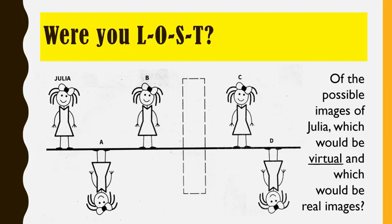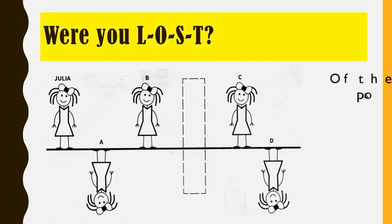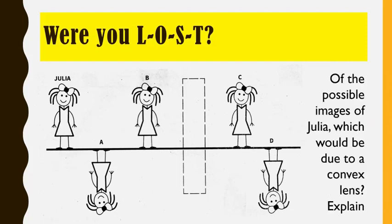Number 3. Of the possible images of Julia, which would be due to a convex lens, and explain. For this question, this lens is supposedly a convex lens, so which would be the possible images of Julia?